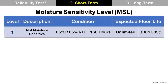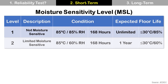There are many MSL levels and these are some popular examples. Level 1 is Non-Moisture Sensitive. Its test condition is 85°C with 85% relative humidity for 168 hours. If the package under test passes this condition, its floor life is unlimited when exposed at lower than 30°C with 85% relative humidity.